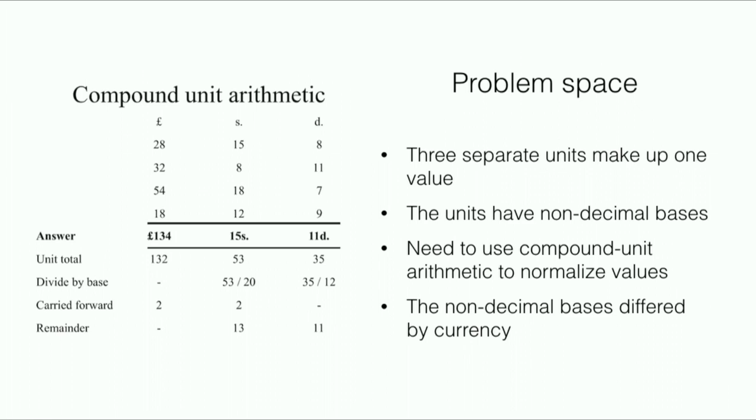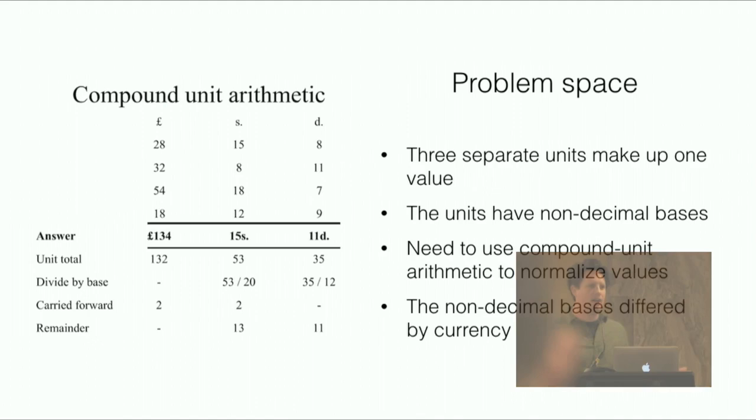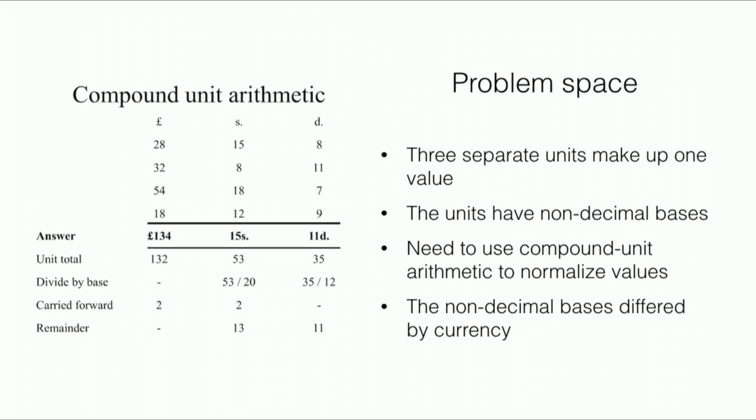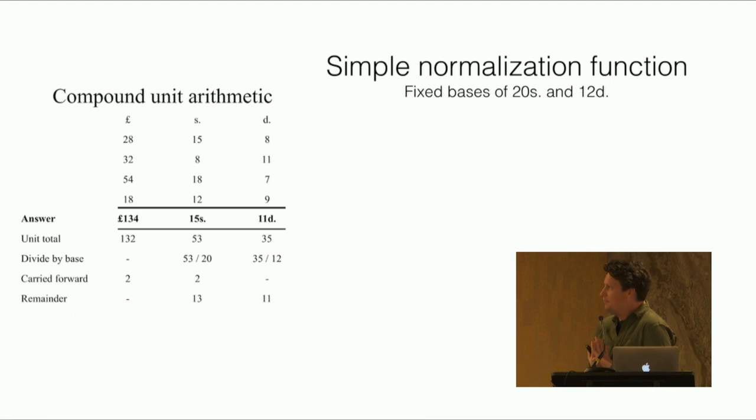We have three separate units that make up one value. Those units do not have decimal bases, so we need to use compound unit arithmetic. To make things even worse, the units can differ. The normal most-used units in historical currencies is 20 shillings in a pound and 12 pence in a shilling, but they could change. You didn't know you were getting so much history today - JJ in the keynote already talked about history of corporations. There's a problem and you can't just plug this in. However, programming languages like R are very flexible and you can use them to do this compound arithmetic yourself.